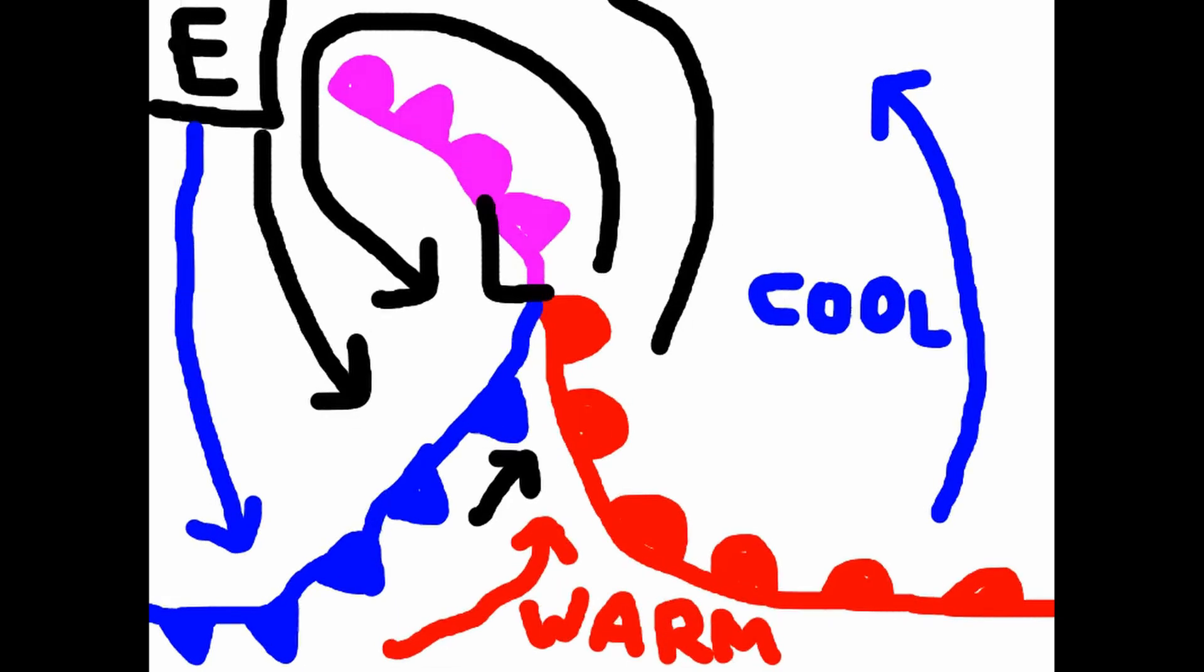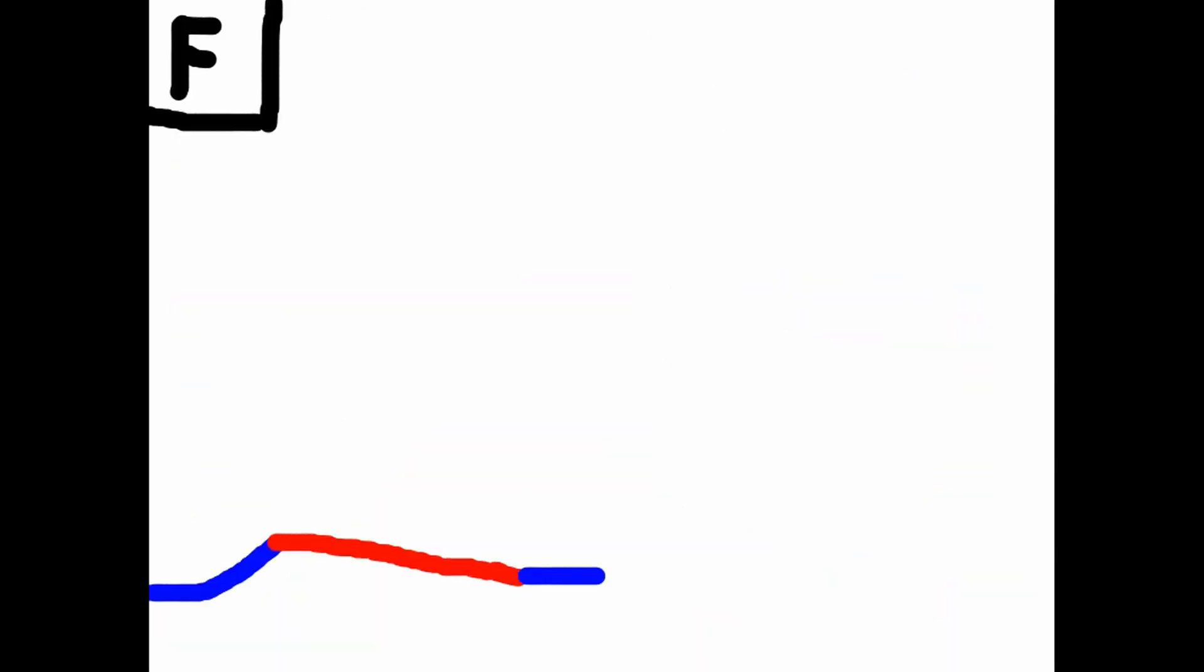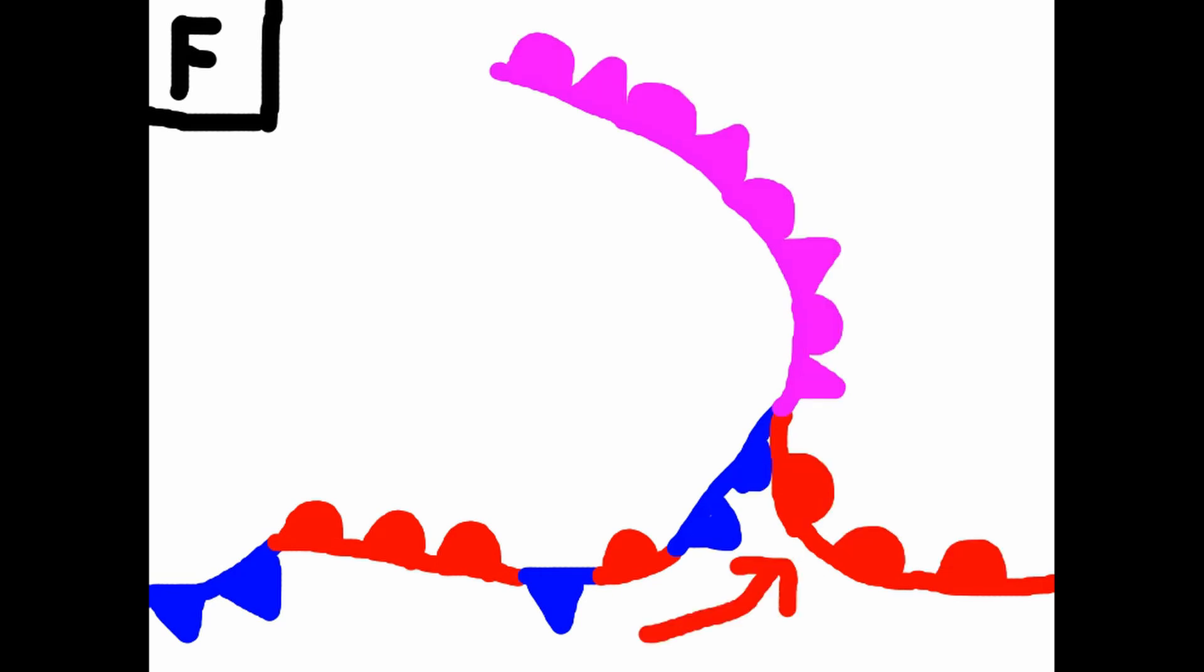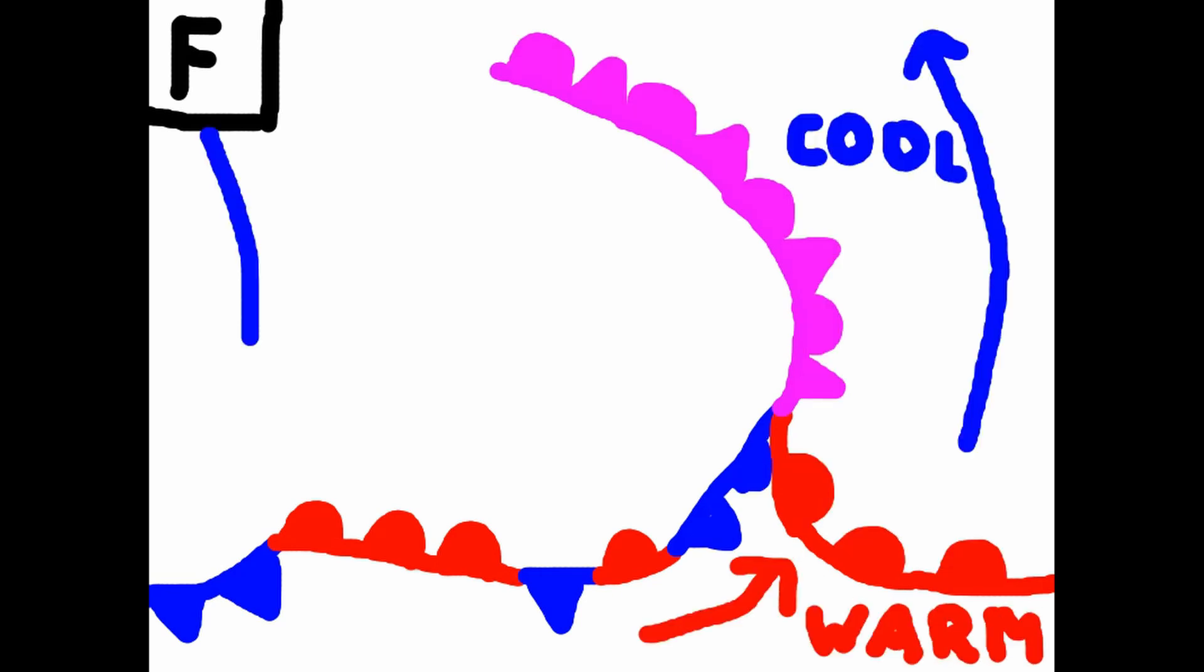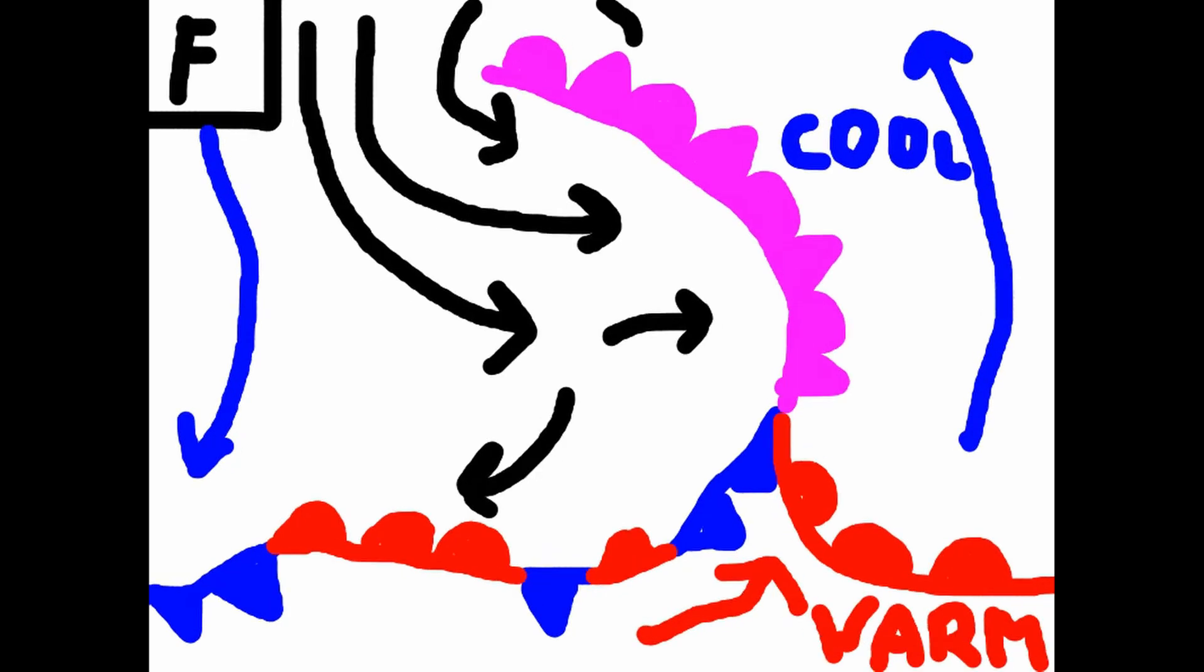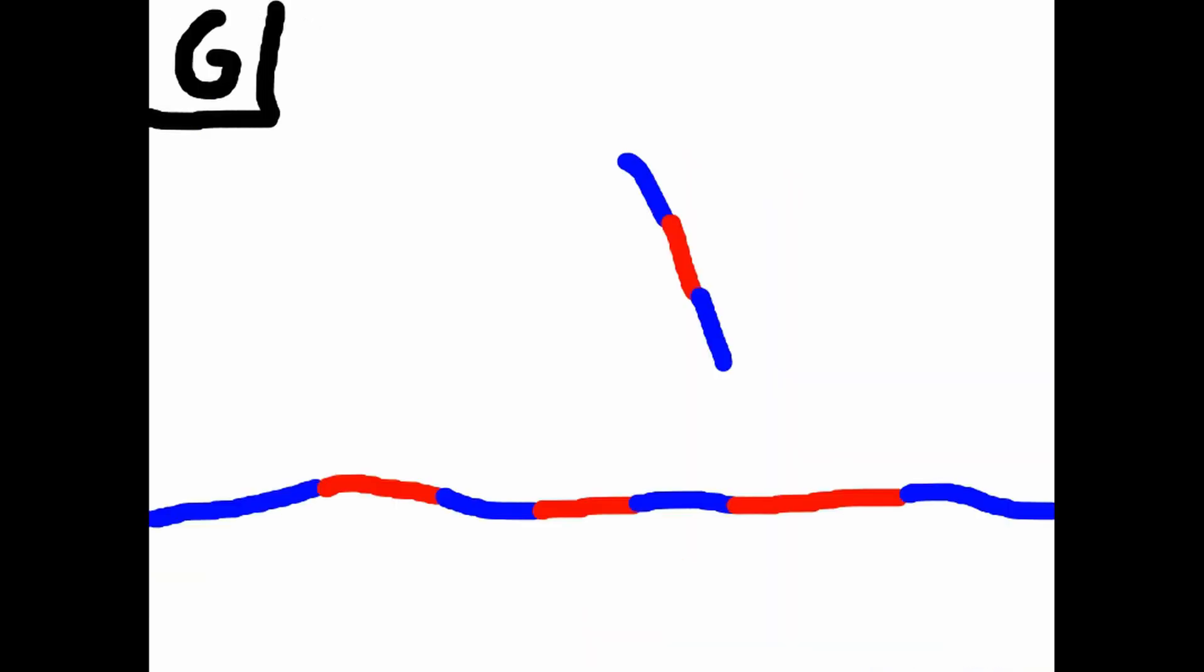Frontogenesis is possible, in theory, without convergence and uplift. It is possible that the streamlines of air come together without uplift, or differential heating and calm air can produce a temperature gradient, i.e., is frontogenetic. But in practice, fronts correspond to lines of convergent flow and uplift.